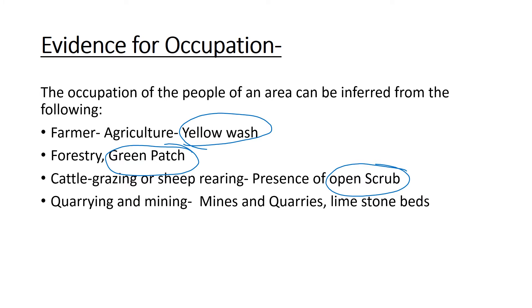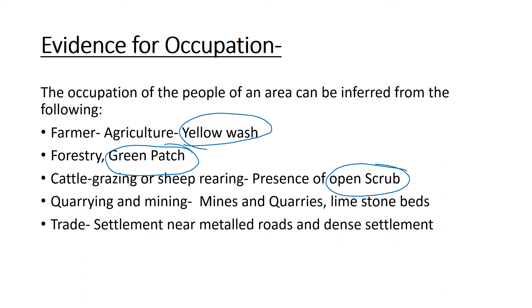Quarrying and mining — if you can see that mines or quarries are there, you can write that. Trade — those settlements near a metal road, very dense settlement, connected by roadways or connected by railways, you can write trade.